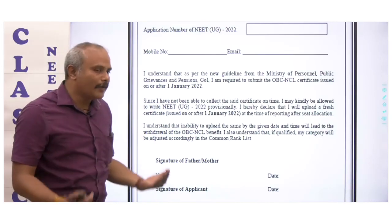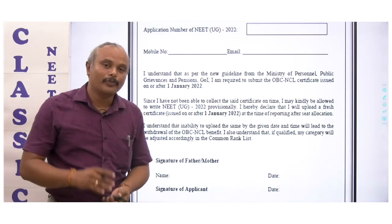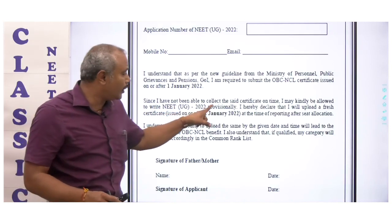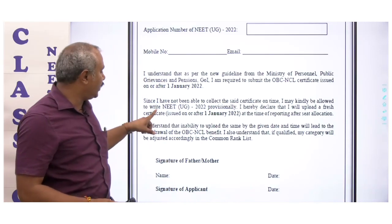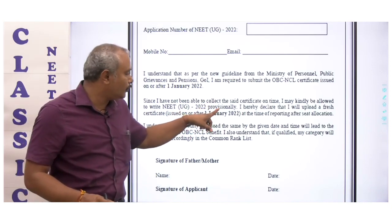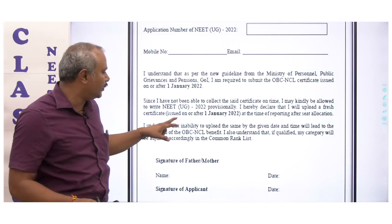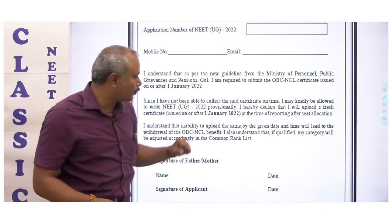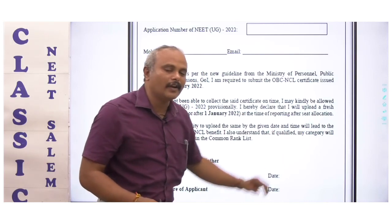If you have not been able to collect the OBC Certificate on time, you may be allowed to write NEET 2022 provisionally. You hereby declare that you will upload a fresh certificate issued on or after 1st January 2022 at the time of reporting after seat allocation.